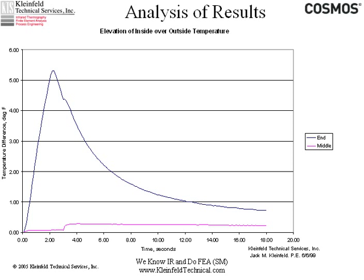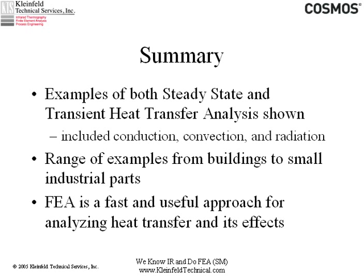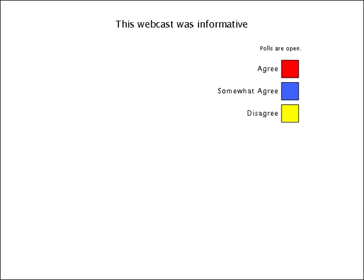So what are we seeing? We've seen a set of examples of steady state and transient heat transfer. I've included conduction, convection, and radiation examples. You've seen that they apply to things as large as buildings and as small as industrial parts. You've seen examples of 24-hour cycles and 18-second cycles. What I need to say is that heat transfer analysis using FEA is a fast and useful approach for analyzing heat transfer and its effects. We have not dealt in any of this with fluid flow, and there are tools for that — Structural Research SolidWorks offers one — but I'm going to stop there. We have a couple of polls I'd like you to take and then we'll open it up for questions.